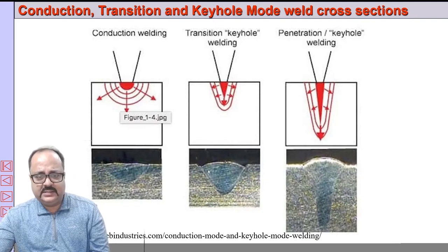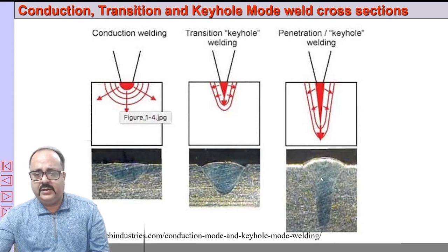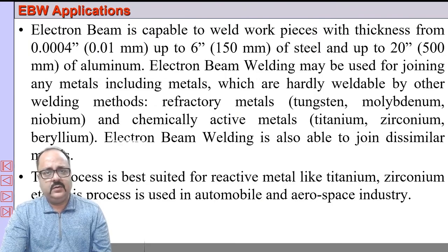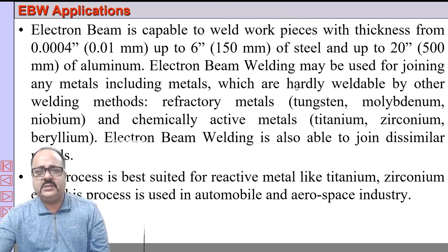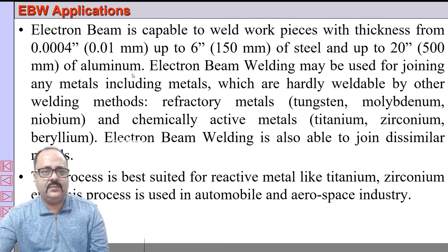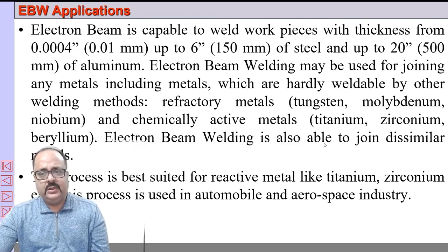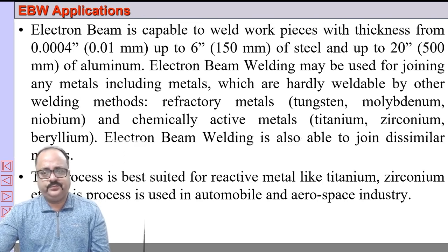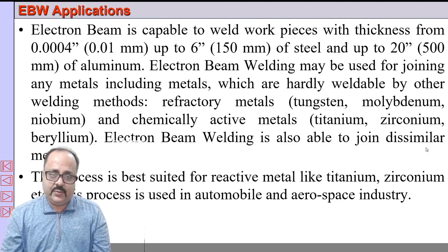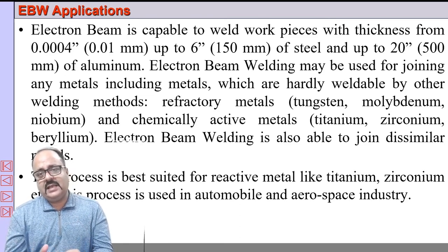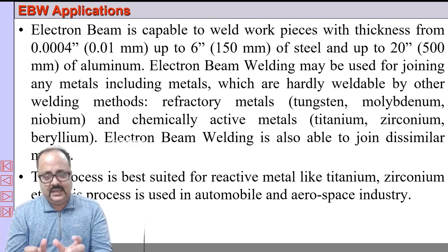Conduction mode produces a shallow, almost semicircular weld bead, while keyhole mode provides deep penetration. The workpiece thickness range is from 0.01 mm to around 150 mm, and up to 300–500 mm in aluminum. EBW is particularly popular with refractory materials like tungsten, molybdenum, niobium, titanium, zirconium, and beryllium. Electron beam welding is also capable of joining dissimilar materials — dissimilar not only in alloy type but also in thickness.